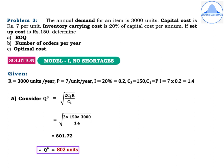Problem 3: The annual demand for an item is 3,000 units. Capital cost is Rs.7 per unit. Inventory carrying cost is 20% of the capital cost per annum. If setup cost is Rs.50, determine EOQ, number of orders per year, and the optimal cost. Since no shortages are given, this is Model 1. R = 3,000; P = Rs.7; I = 20% = 0.2; C₃ = Rs.150. So C₁ = P × I = 7 × 0.2 = 1.4.